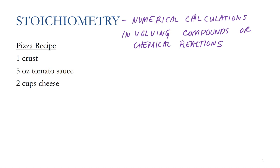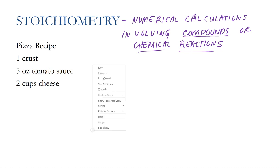Now technically, we've already done some stoichiometric calculations. When we did percent by mass calculations for compounds, we took the stoichiometric ratio of the individual elements into account. A lot of times the term stoichiometry is stressed when we are doing numerical calculations involving chemical reactions, and that's why we didn't really introduce the term until now.